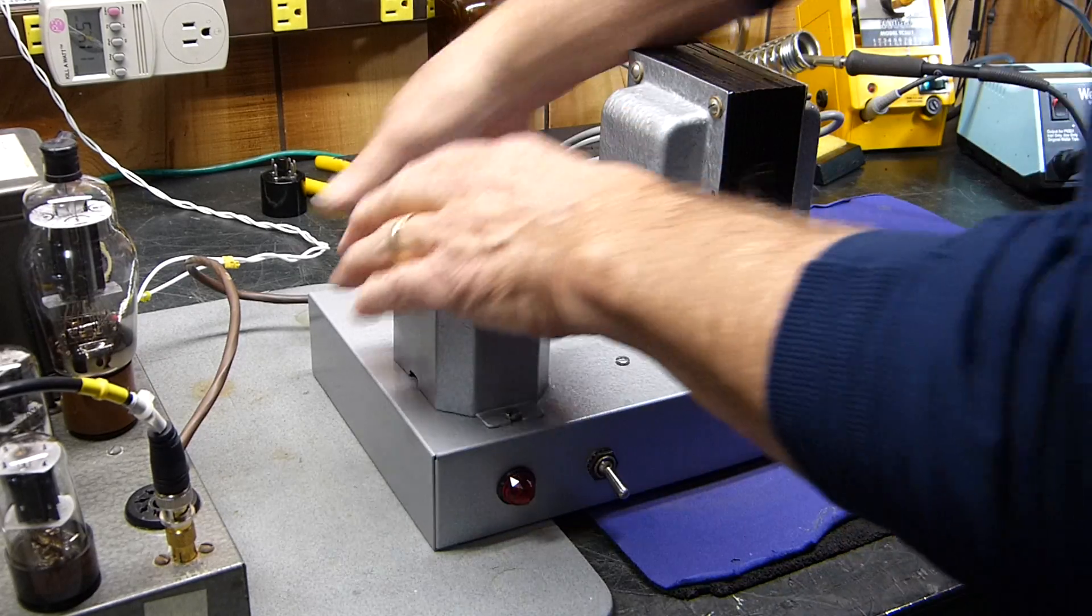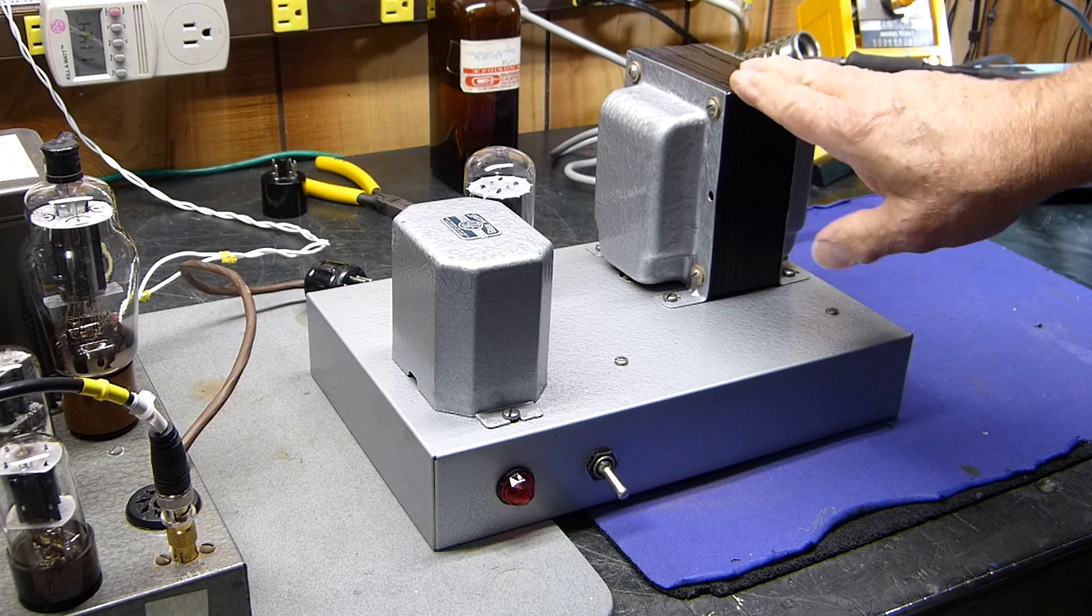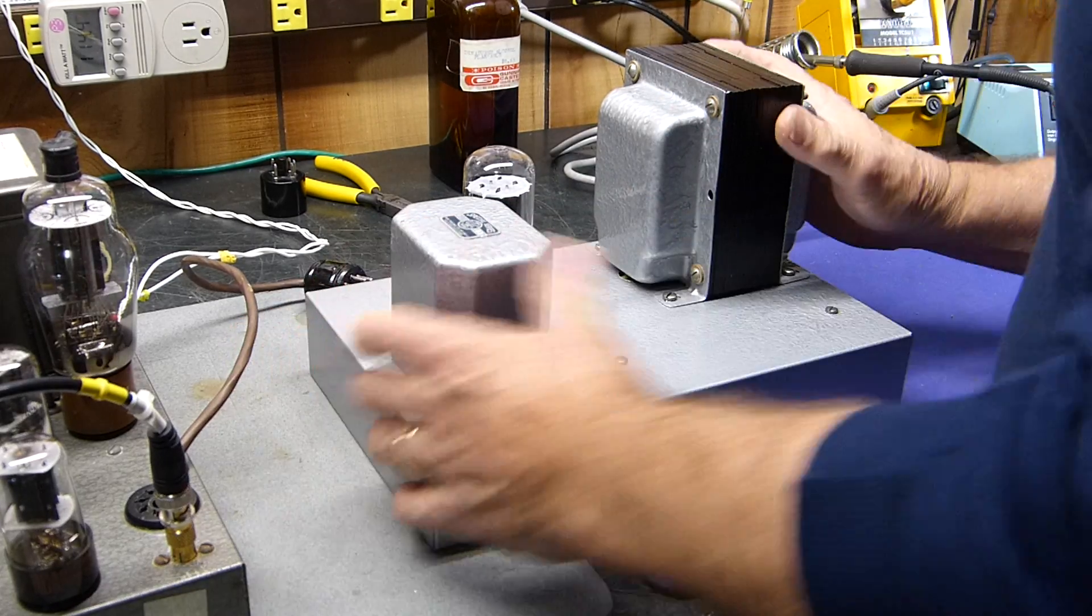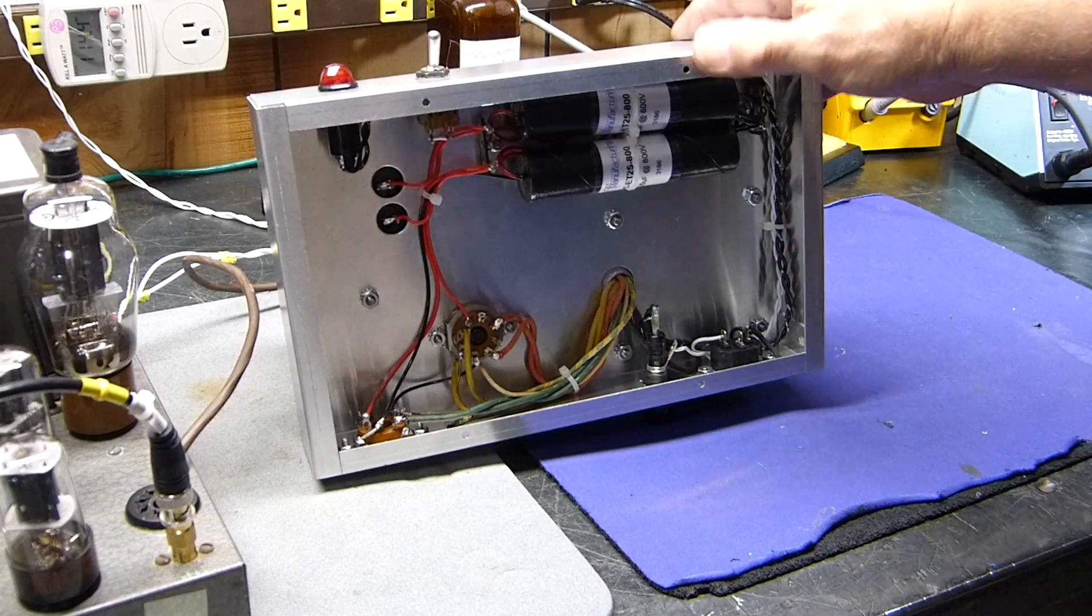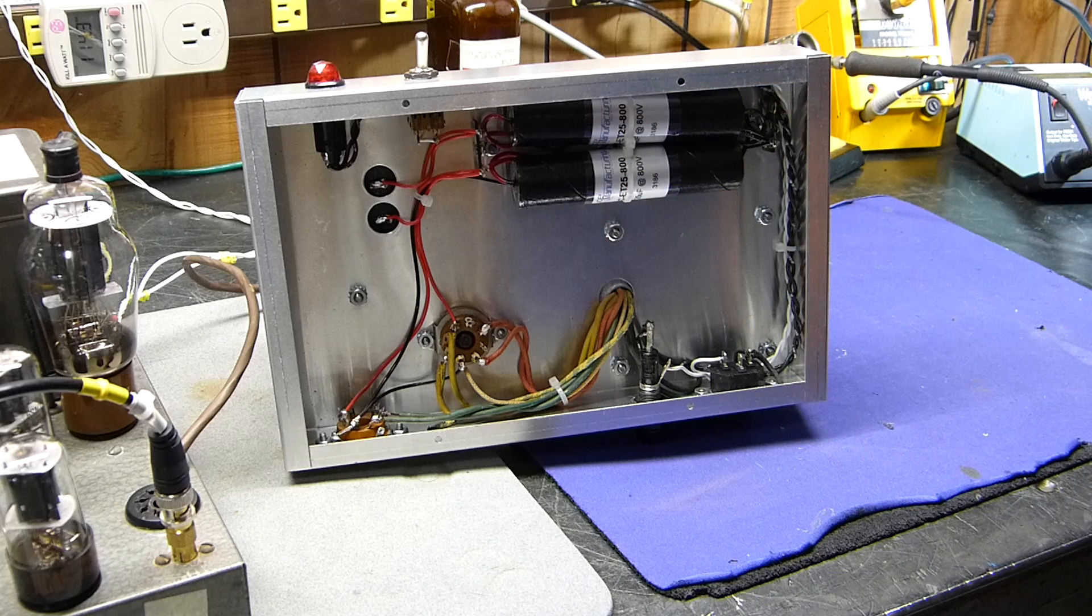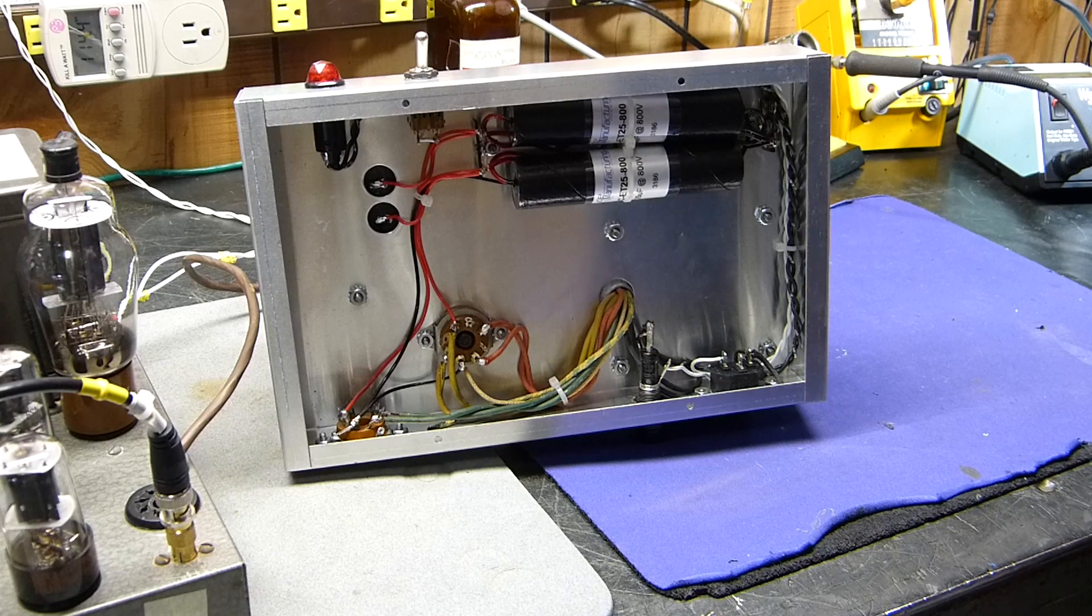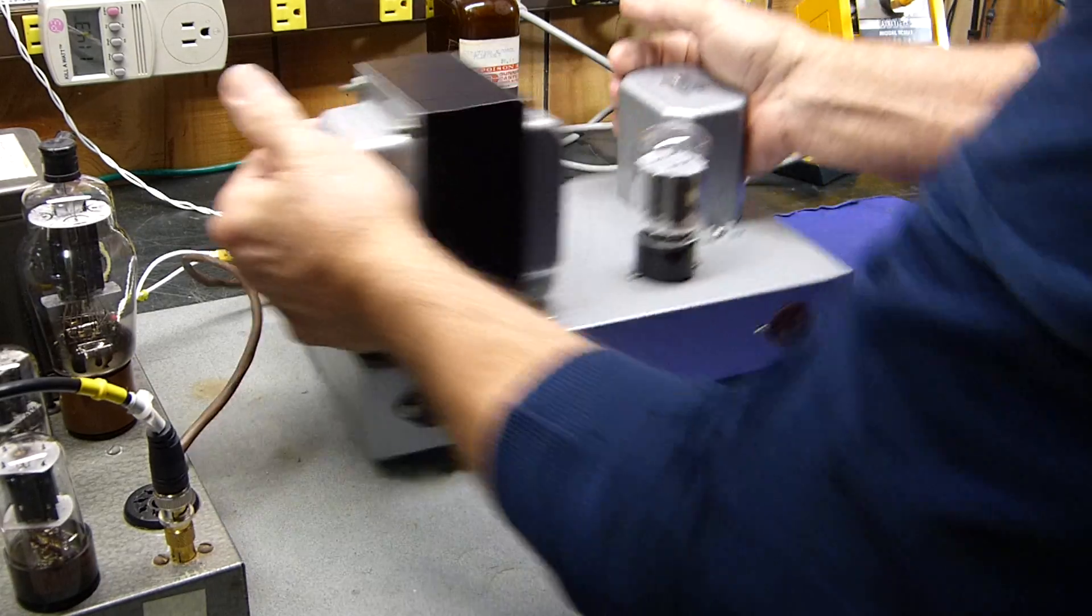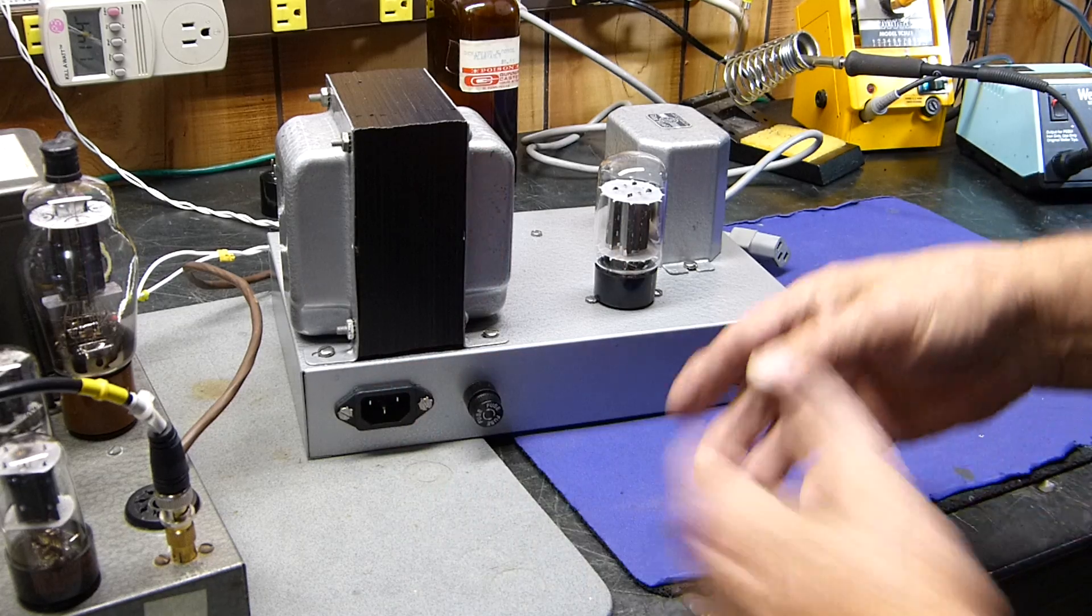It's actually quite simple. This is a big toroidal power transformer, a little bit of overkill. Nice UTC choke. Underneath, I'll show you underneath, not much to it. I did use 800 volt capacitors so I don't have to worry about the voltage soaring up when you first turn it on. Pretty simple. I do use these IEC type connectors so you can disconnect the plug and the AC and move it around without having to have that wire hanging around all the time.